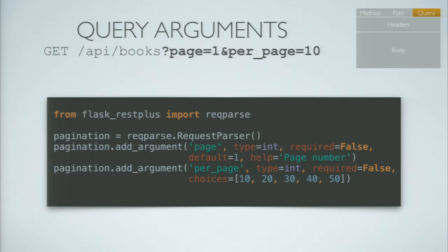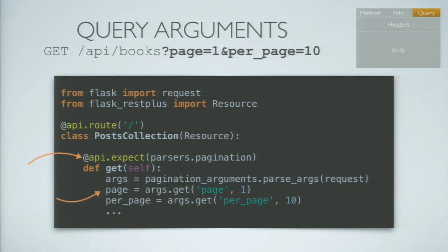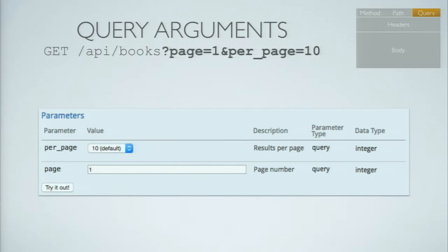Next is the query. The query is composed of fields, so to get a query into your API method you use something called a request parser. You create a request parser object and add fields to it — you can specify the name of each field, the type, and additional options like whether it's required or not, or valid options. All of this gets automatically validated when a request comes in. To attach it to a method, you use the api.expect decorator, and then you can use the parser in the body of your method to get the actual values of the arguments.